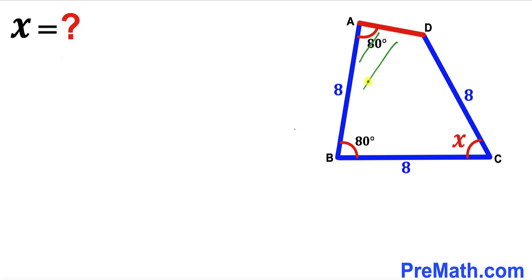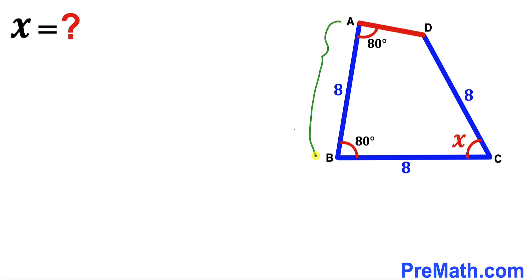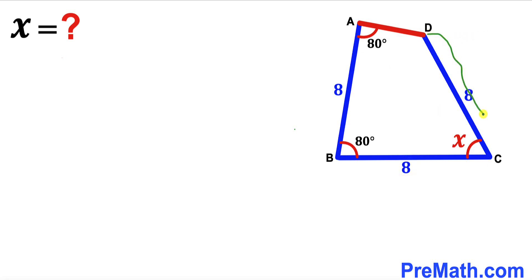Welcome to Pre-Math. We have quadrilateral ABCD where interior angle BAD is 80 degrees, angle ABC is 80 degrees, and angle BCD is represented by x. The side lengths AB, BC, and CD are each 8 units. Our task is to find the value of angle x.